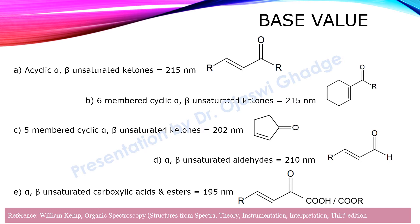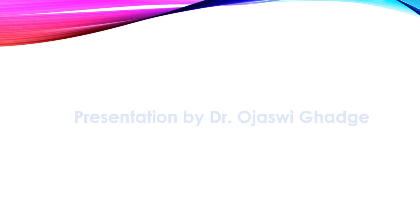All these base values have been referred from the reference given below. You can see the position of alpha and beta carbons in each type of alpha-beta unsaturated system. The alpha carbon is always adjacent to the carbonyl group, and we name that carbon as beta which is adjacent to the alpha carbon.